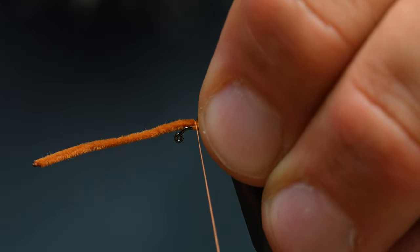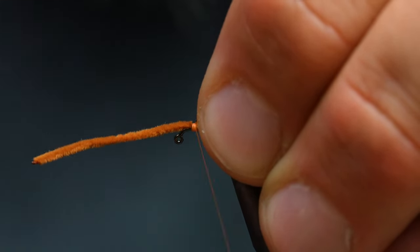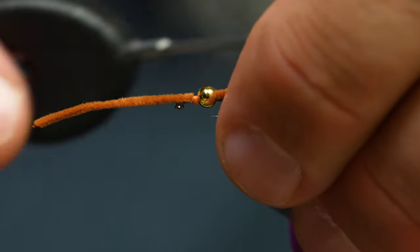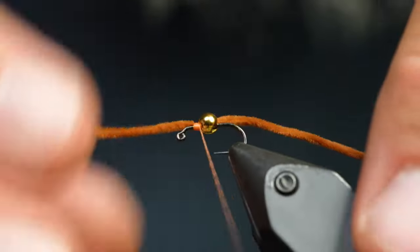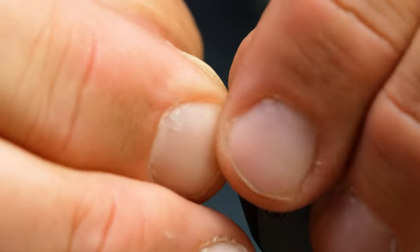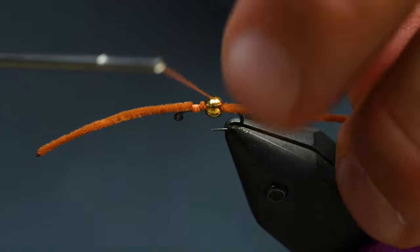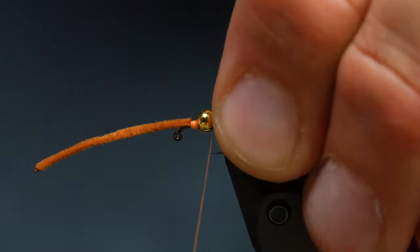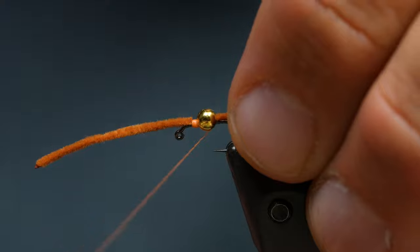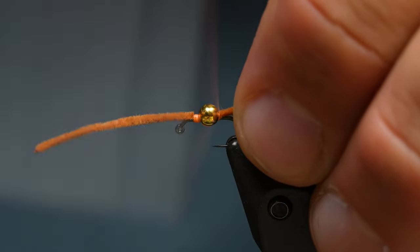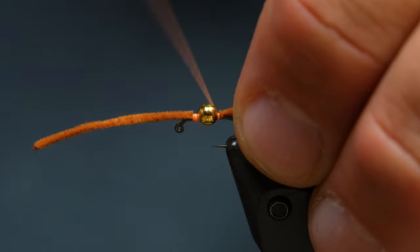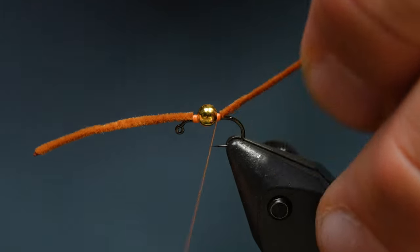I'm just going to tie this down, create a little orange band and then come underneath it. Make sure that the slot is right under, kind of on the belly of this. Easier said than done again, but I'm just going to advance my thread back behind the bead now.